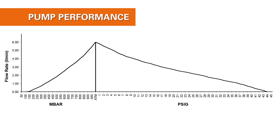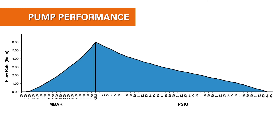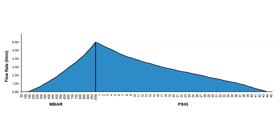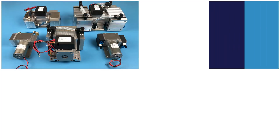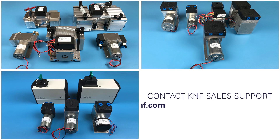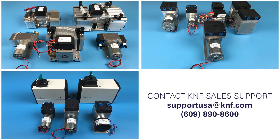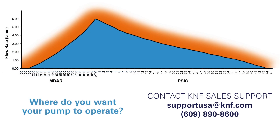Standard KNF pumps are capable of operating at any point under the given performance curve, but where we specialize is in our ability to also operate above the curve. Through our modular design approach, KNF works with customers to provide custom products that exceed our standard performance boundaries to meet the demands of each unique application. Customization of motors, materials, dimensions, and more is achieved through collaboration with KNF sales and engineering teams. Contact us now and let us know where on the curve you intend to operate, and we will help design the perfect pump for your application.